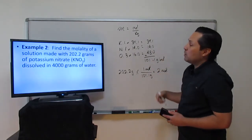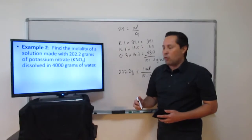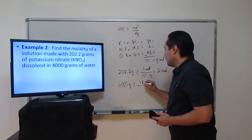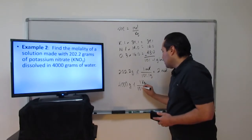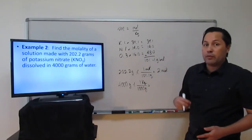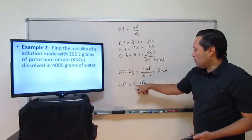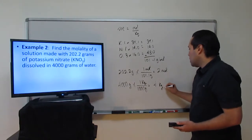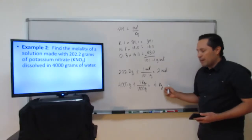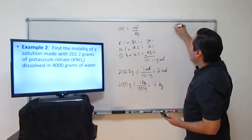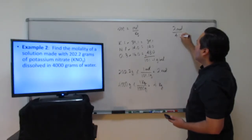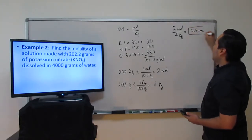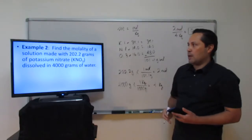For our denominator we have 4,000 grams of water. The formula calls for kilograms, so: 4,000 grams × (1 kilogram / 1,000 grams) = 4 kilograms. To solve for molality it's just moles divided by kilograms: 2 moles over 4 kilograms gives us 0.5 cursive M, which is 0.5 molal. That is the answer for example 2.